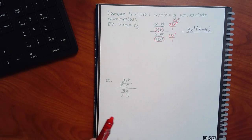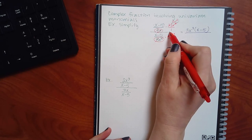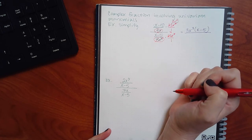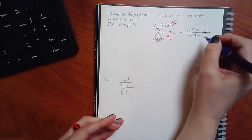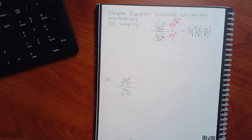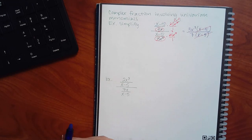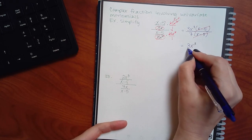Now let's do the same thing for the bottom. 3 goes into 21 seven times. X to the fourth will cancel itself out. So it's going to be 7 times (X minus 5). And just like the numbers, with the variables as well, we have to ask ourselves: does this reduce? Yes — you can take the (X minus 5)s out of there. Those will reduce. You can't do anything with the 3X cubed over 7 — it's going to stay like that, and that's your answer.